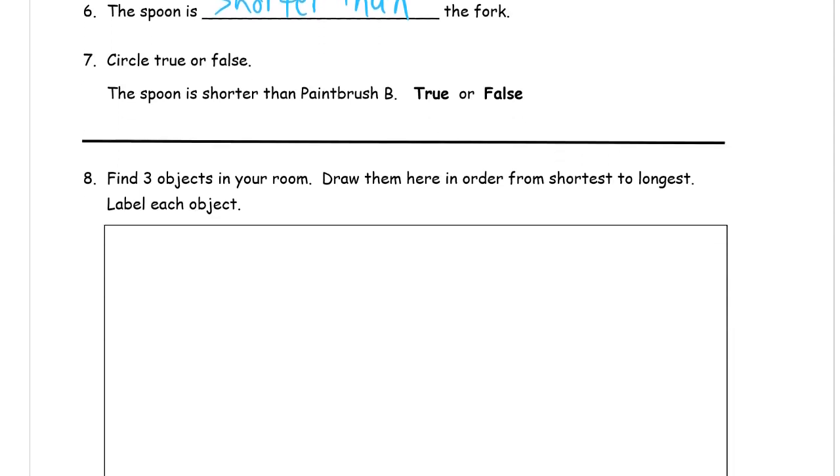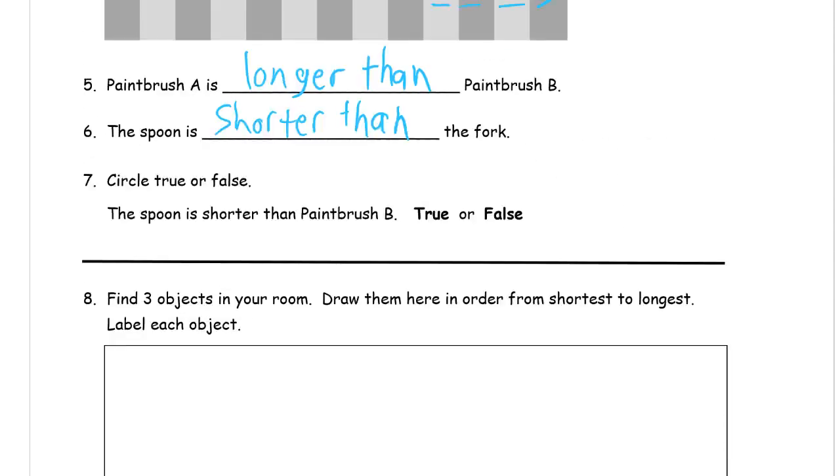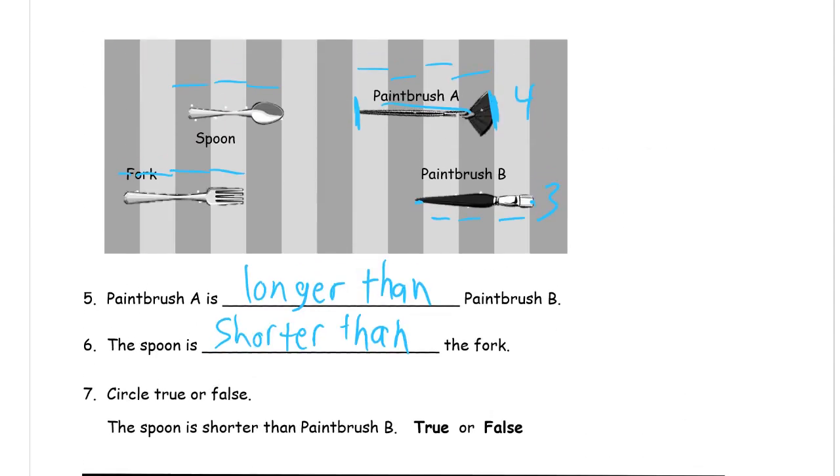Now we're circling either true or false. The spoon is shorter than paintbrush B. Paintbrush B is one, two, three. It's a little bit more than three. The spoon is one, two, is almost three. So the paintbrush is longer. The spoon is shorter. That's true.